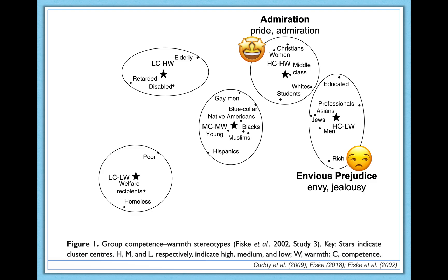For the high competence, low warmth group, we have envious prejudice — this group is typically associated with emotions such as envy or jealousy toward people who are professionals, educated, or rich, but not viewed as very warm. For the moderate group, the emotions are mixed as well — inconsistent. You do see stereotypes, prejudice, and discrimination toward some of these groups sometimes, but other times less so.